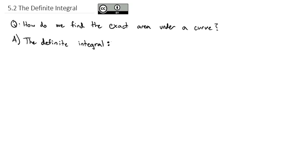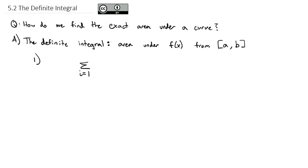The idea of the definite integral is we're trying to find the area under some function f of x from a point A to a point B. The definite integral is defined from the area formula we used in the previous section: the area was equal to the sum as i goes from 1 to n of each of the heights f(x_i) times delta x. As we use more and more rectangles, this definition becomes more and more exact for the area.